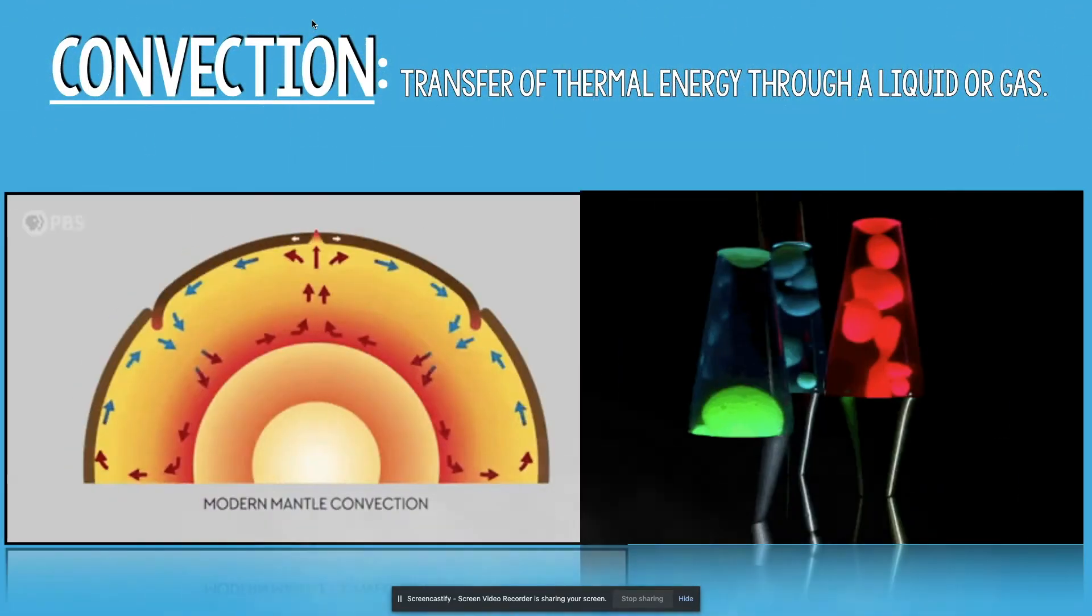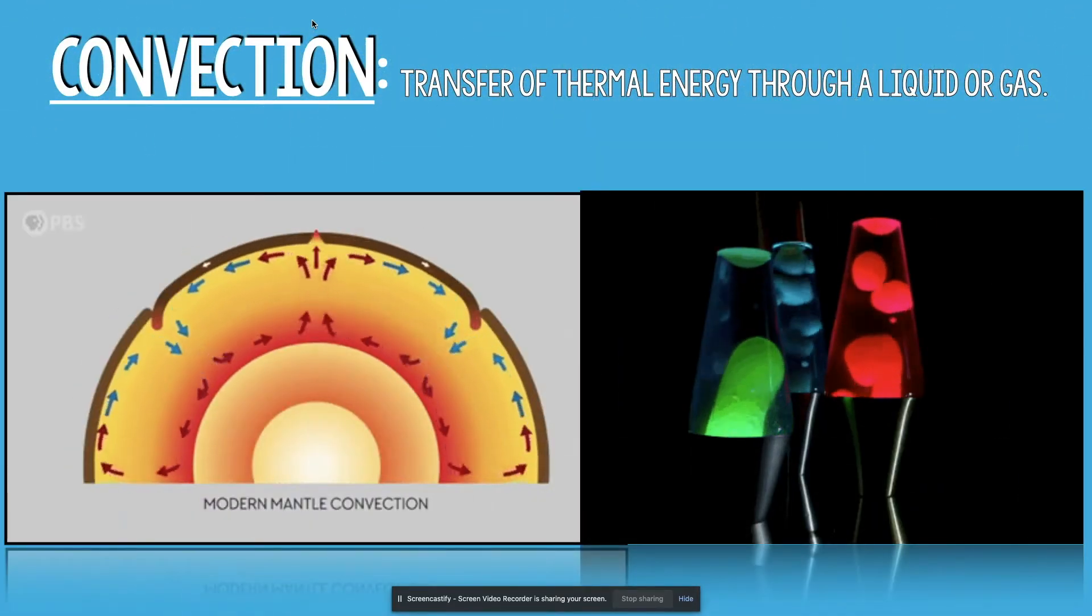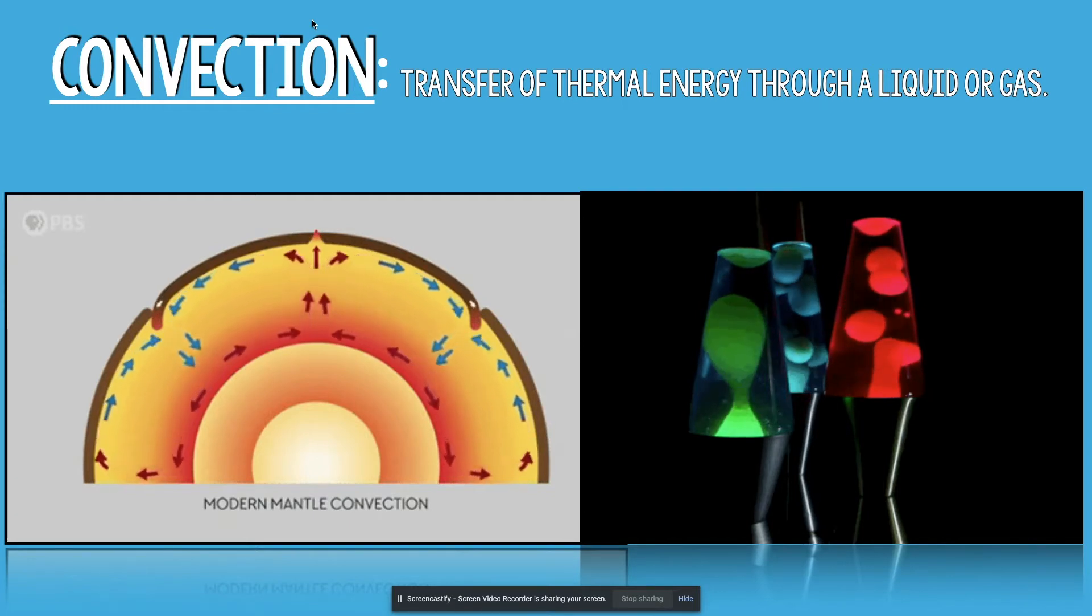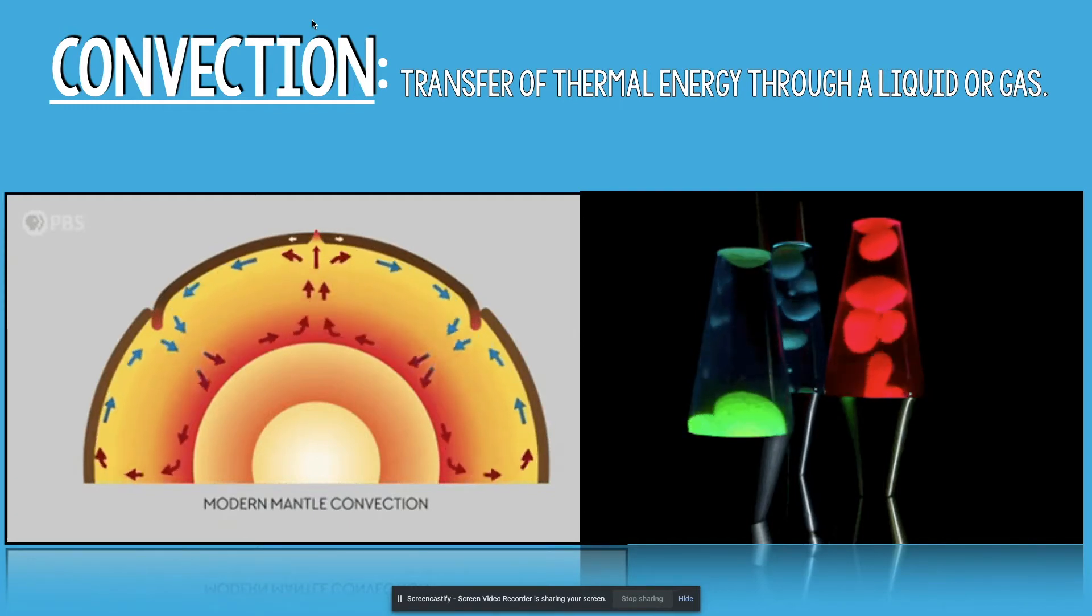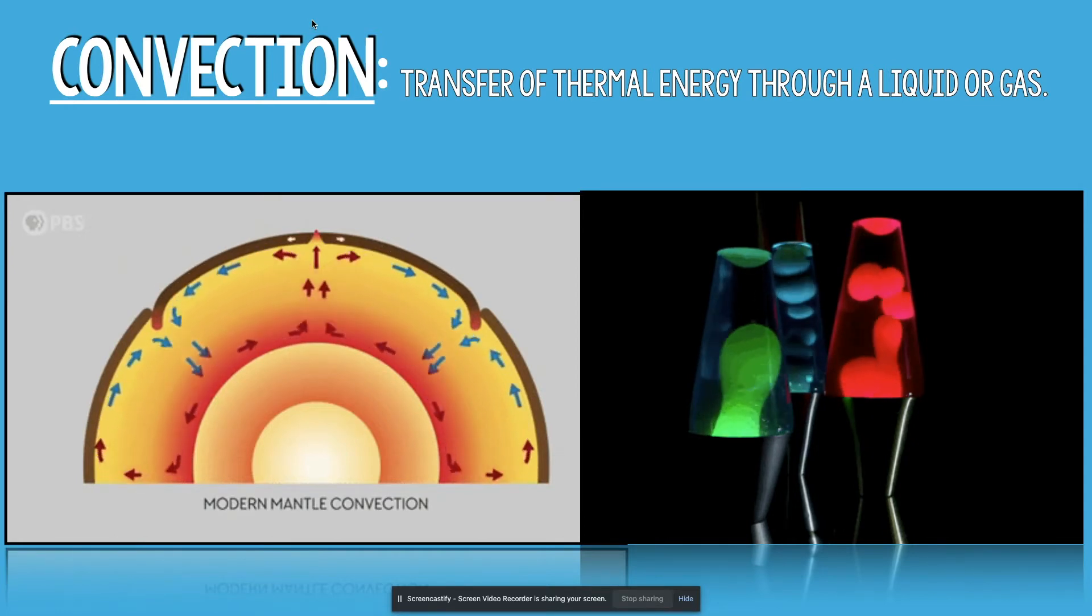Number two: convection, the transfer of thermal energy through a liquid or a gas. We have the rising and falling movement of magma underneath the earth's surface in the mantle, and we also have a lava lamp where warm liquid rises and falls.